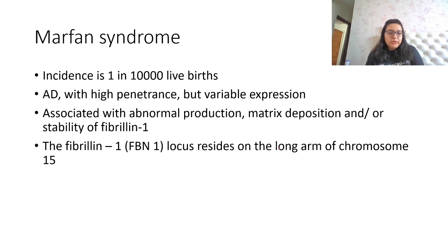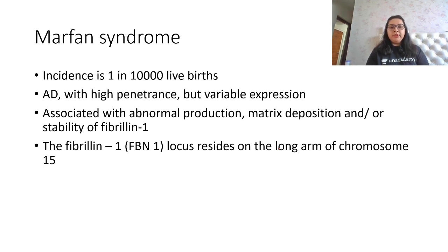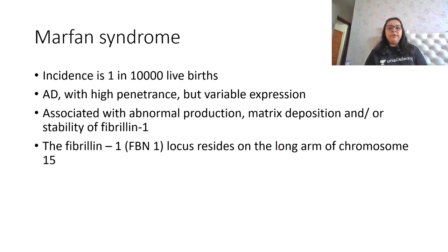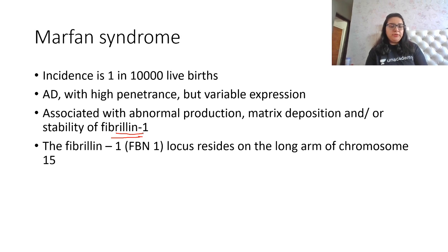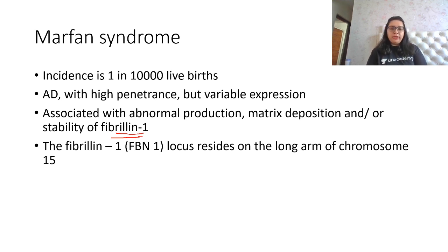Next is Marfan syndrome — very important from an MCQ perspective, related to musculoskeletal and other systems. Incidence is one in 10,000 live births. It is mostly autosomal dominant with high penetrance but variable expression, associated with abnormal production, matrix deposition, and instability of fibrillin-1. The fibrillin-1 locus resides on the long arm of chromosome 15.